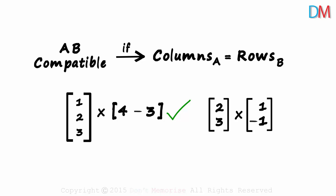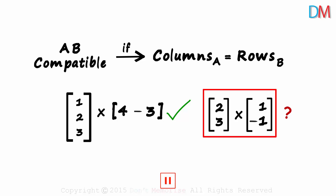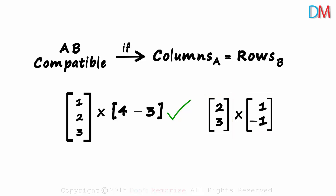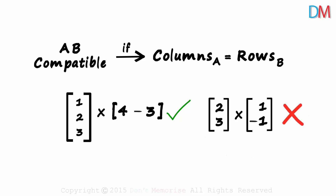Here's the second example. I encourage you to pause the video and check if this multiplication is possible or not. For this to be possible, the number of columns in the first matrix has to be equal to the number of rows in the second matrix. The first matrix has one column and the second matrix has two rows. As one is not equal to two, this multiplication is not possible. Remember: the number of columns in the first matrix should equal the number of rows in the second.